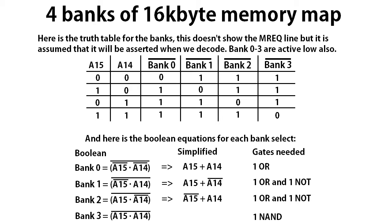These outputs are active low, so a zero on the bank line will activate that bank. It's a very simple bit of logic that handles this. Below I've shown the Boolean equations for it, and I've simplified a few of them — you could probably get them simpler, but I didn't put too much effort into that yet, which you'll see why in a minute. It narrows down to a few gates needed. If I'm not mistaken, you can complete this using two ICs, because you usually get four OR gates in one IC, and you can get four NANDs in a quad NAND package. You can use a NAND as a NOT gate if you tie the inputs together, so that's doable with two chips altogether.